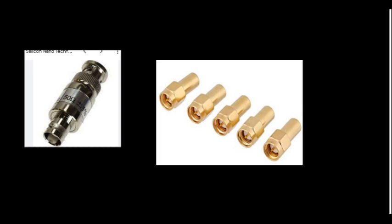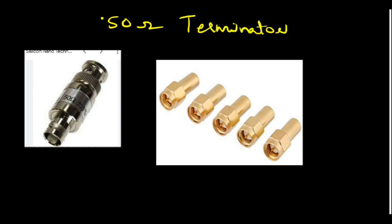Sometimes when you connect RF we have to terminate, so for that we use a 50-ohm terminator. This is the BNC type 50-ohm terminator, and this is the SMA type — SMA stands for Sub-Miniature Assembly. So this is an SMA type 50-ohm terminator. All SMA type connectors look similar.